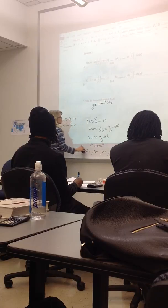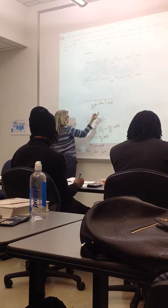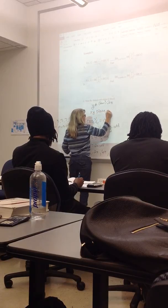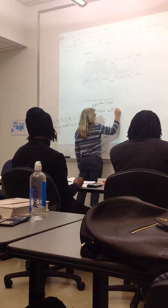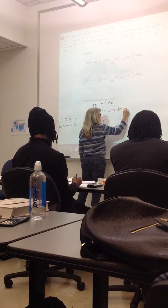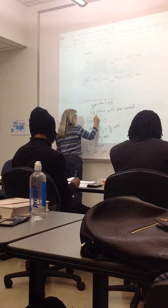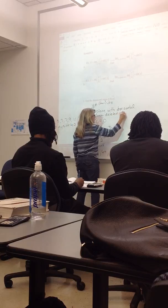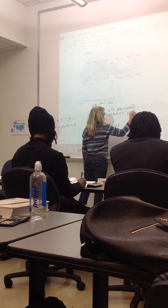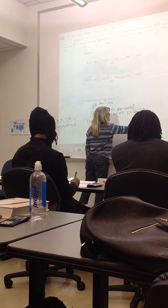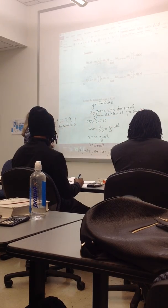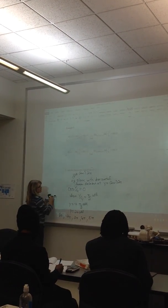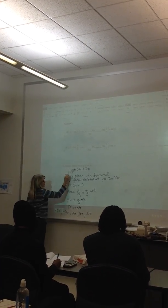Y can't be an odd multiple of two pi. So graph, geometrically, what this means, it's the xy plane with horizontal lines deleted at y equals odd multiples of two pi. All right. Okay. That's my domain.